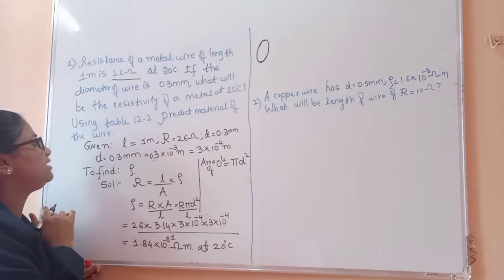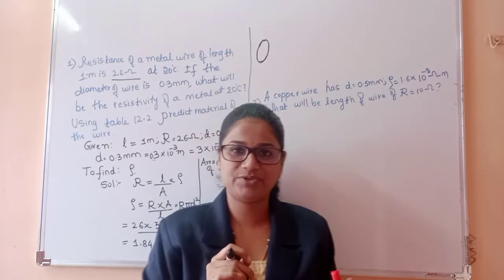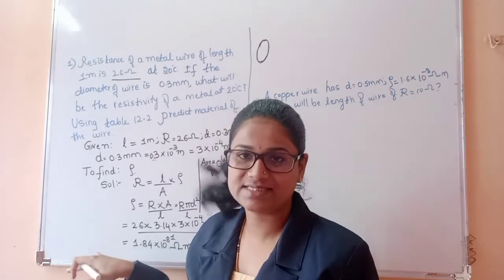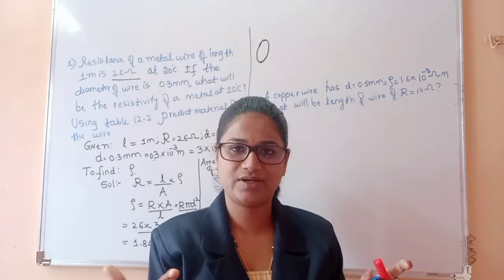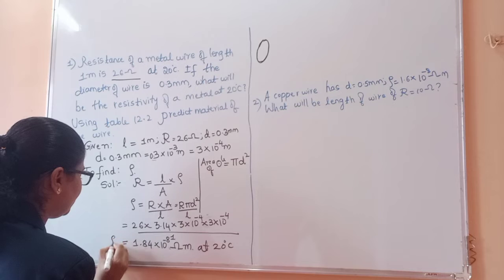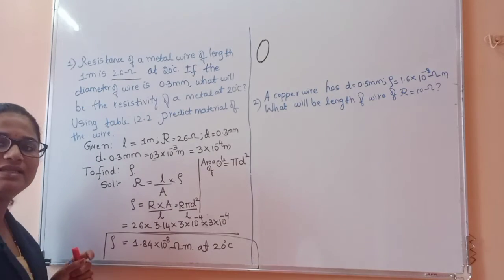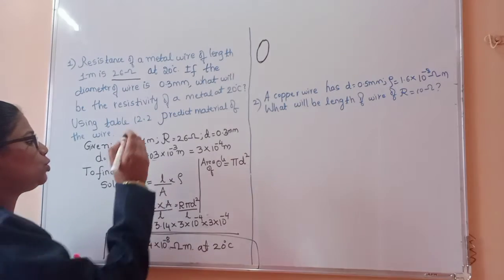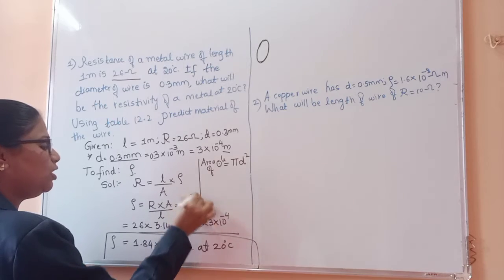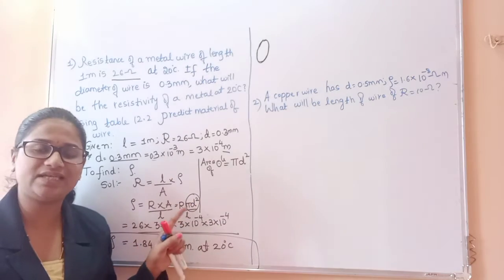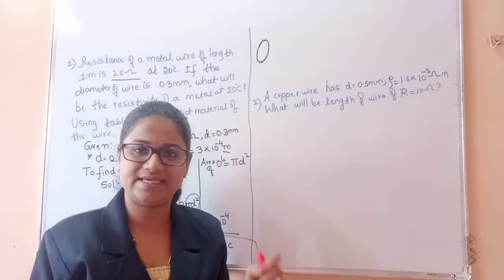Using table 12.2 from the textbook, we have to predict the material of the wire. We found resistivity as 1.84 × 10⁻⁸ ohm meter. We need to check whether it is iron, copper, or another material. Key points: convert diameter to meters and use the area formula from the diameter.